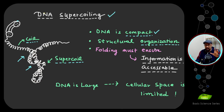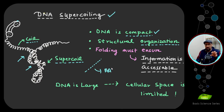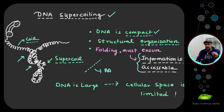Next is structural organization. The organization of the DNA molecule is not random — it's not messy — it's very organized, and when DNA gets organized we see the structures called chromosomes. The folding must ensure that the information contained in DNA — the codons encoding amino acids, which form peptides and polypeptides — that information needs to be accessible when the cell needs to synthesize a particular protein molecule.